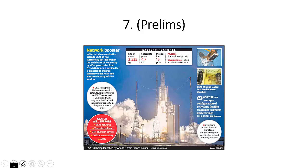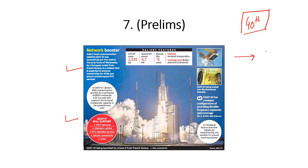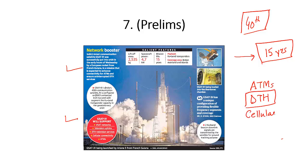Now let's look at another news on page number 7: G-Sat 31 has been launched from French Guiana. This is India's 40th communication satellite — a very important fact for your prelims. The mission life is 15 years. This satellite is expected to enhance connectivity for ATMs, ensure uninterrupted DTH services, direct-to-home services, as well as cellular connectivity.